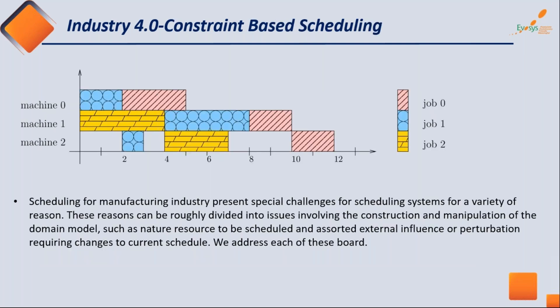For Industry 4.0, we have taken a couple of use cases to present, but this is the most important one in my experience: the scheduling process. Scheduling is found in each and every manufacturing company, factory, or section — be it process manufacturing or discrete manufacturing, mass production, make-to-order, or anything else.